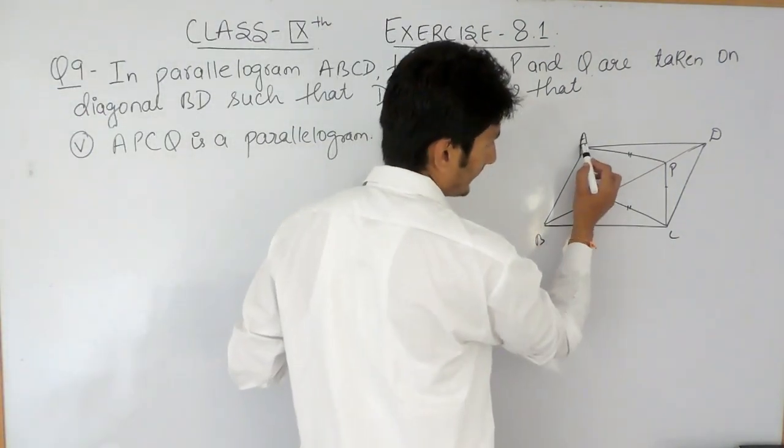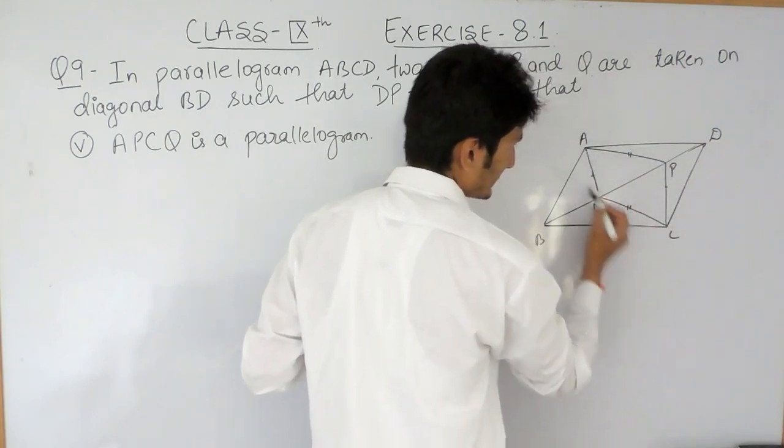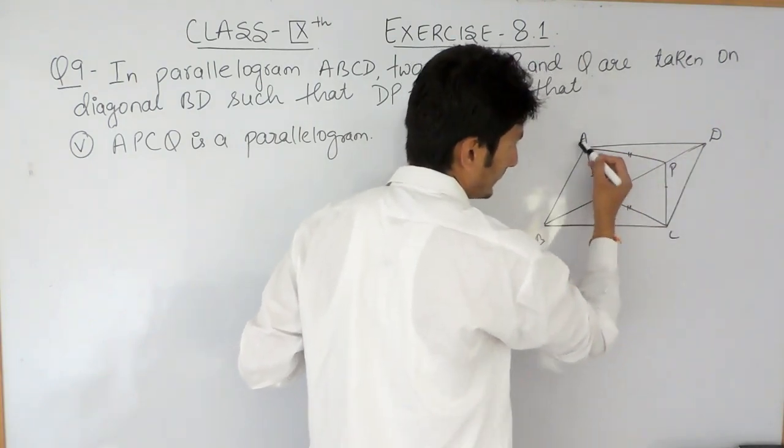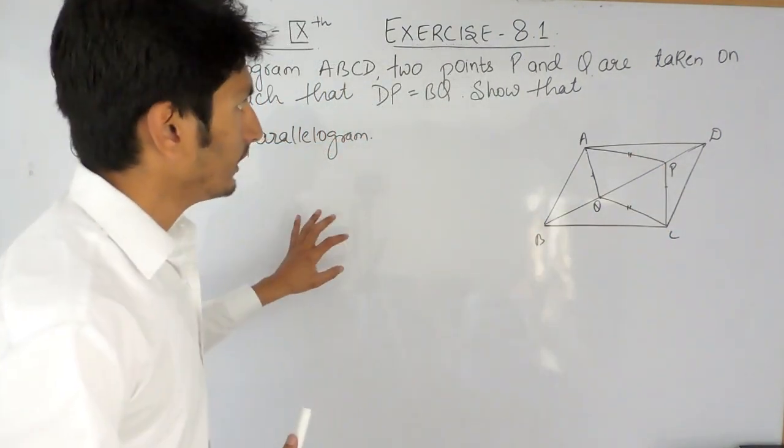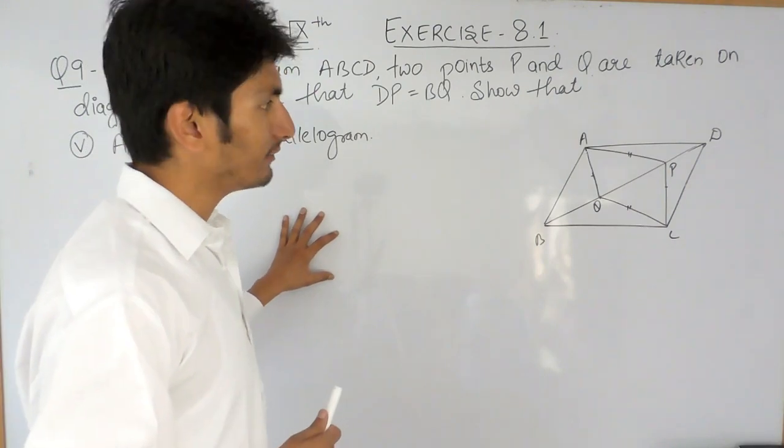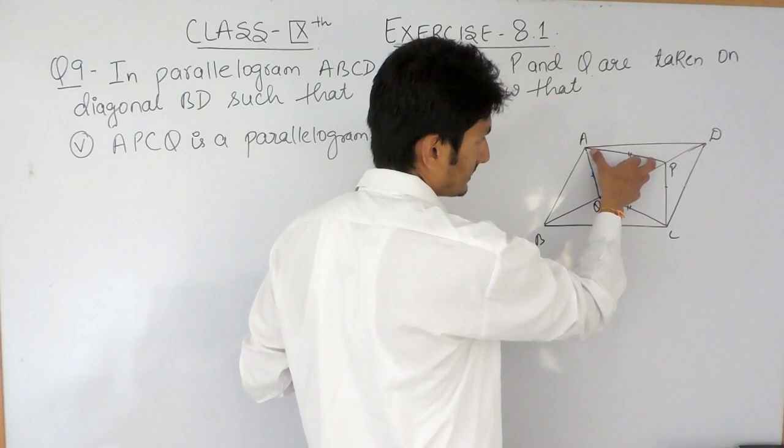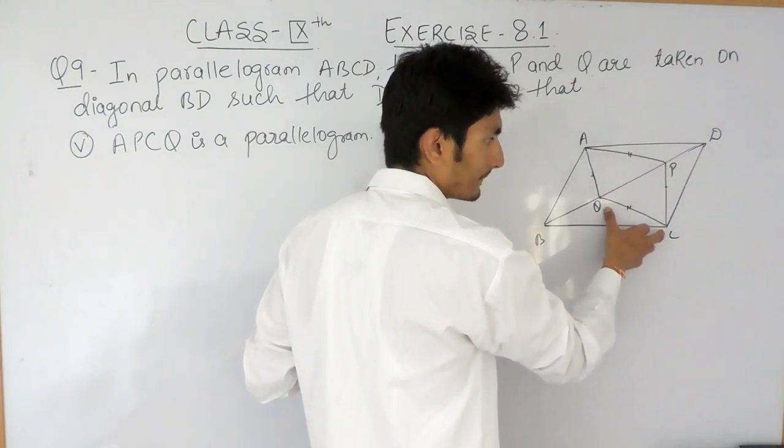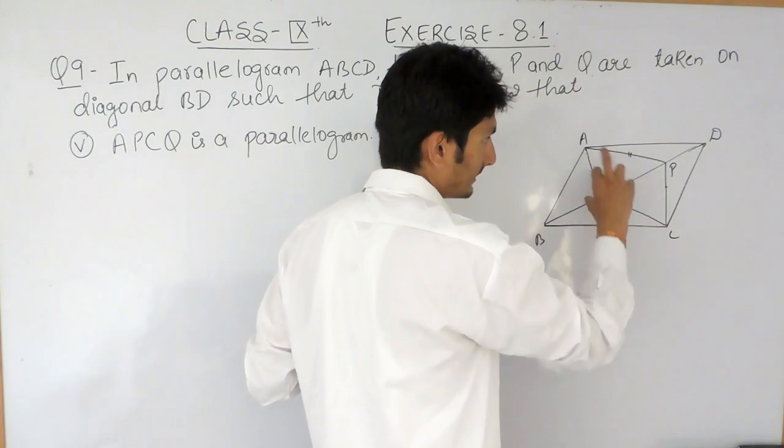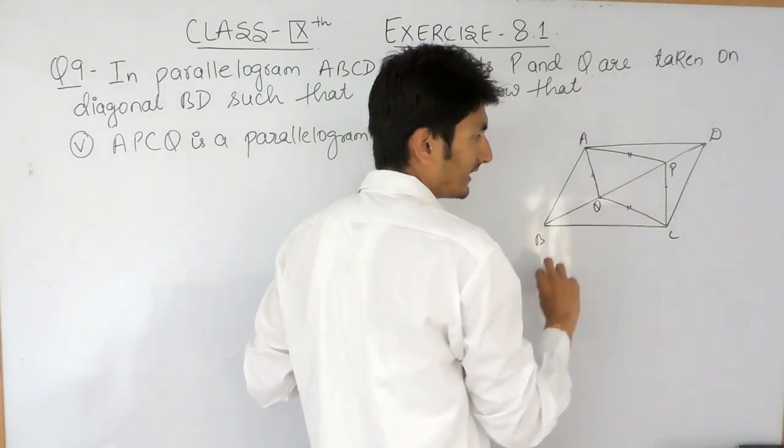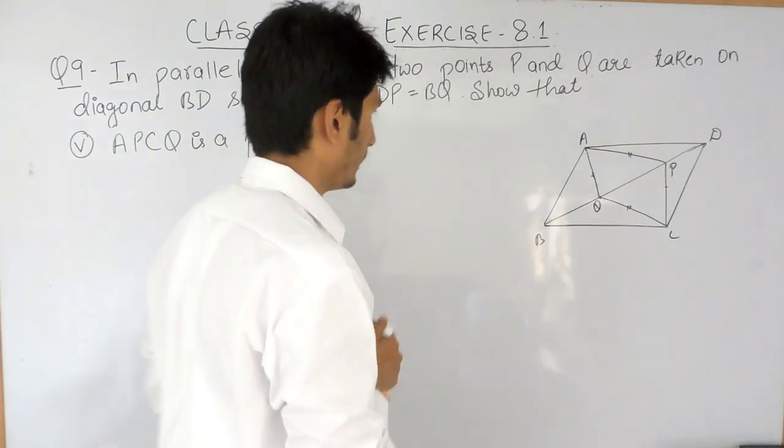This figure which is inside this parallelogram ABCD is also a parallelogram. Now in the second and in the fourth part we have proved that AP is equals to QC, this we have proved in the second part, and in the fourth part we have proved that AQ is equals to PC.